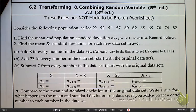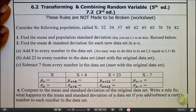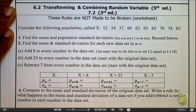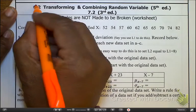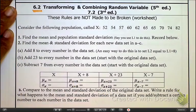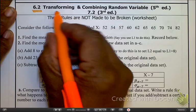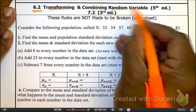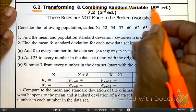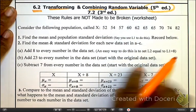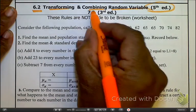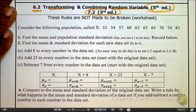Hey guys, there's more information here in terms of discrete random variables. Our objective is section 6.2, transforming and combining random variables. Fifth edition, that's from section 6.2. Third edition, you're in 7.2.